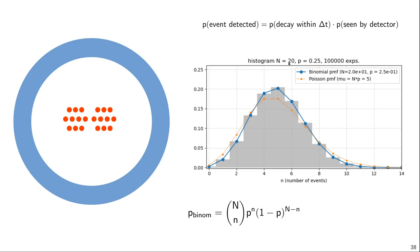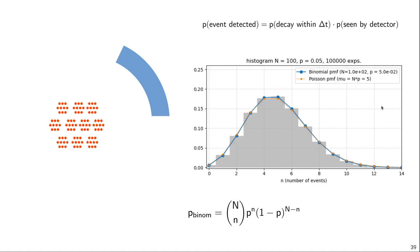We can do the same starting with 20 nuclei and a detection probability of 0.25 — for example, a perfect detector but with a slightly shorter measurement time delta t. On average we expect five events (20 times 0.25), and again the simulated distribution is perfectly described by the binomial distribution with n equals 20 and p equals 0.25. Then increasing n by a factor of five and decreasing p by the same factor keeps n times p constant at five.